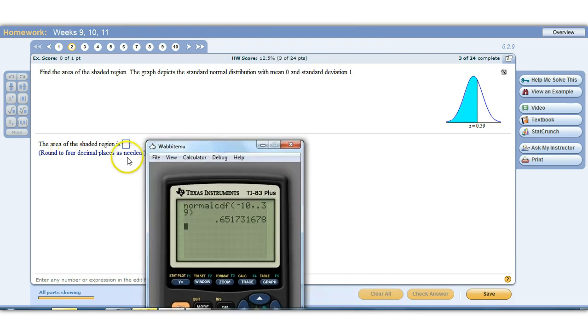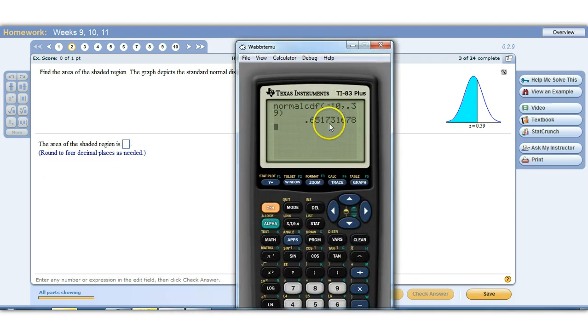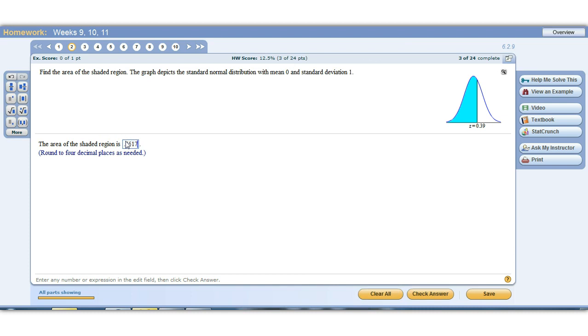0.65173. They want us to take it to four decimal places as needed. So there's the fourth decimal place, 7. The next one is a 3. So we're going to round it to 0.6517.